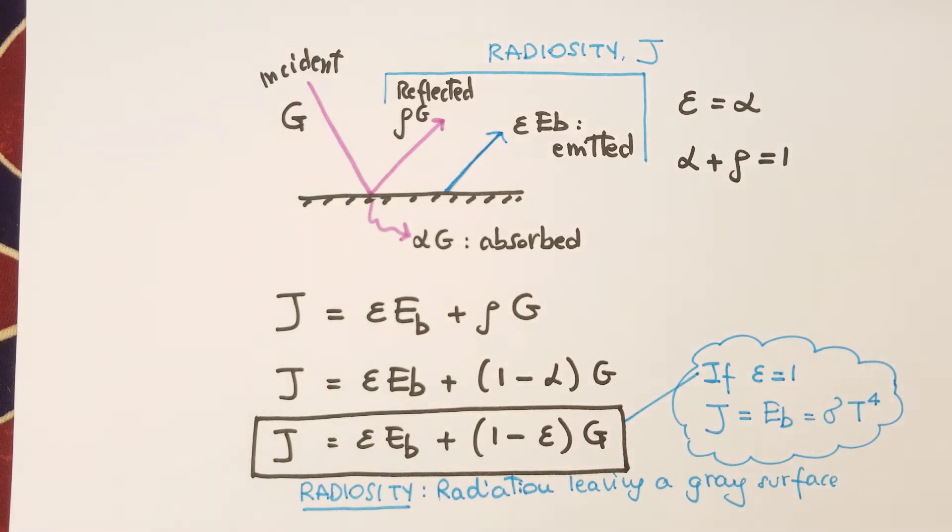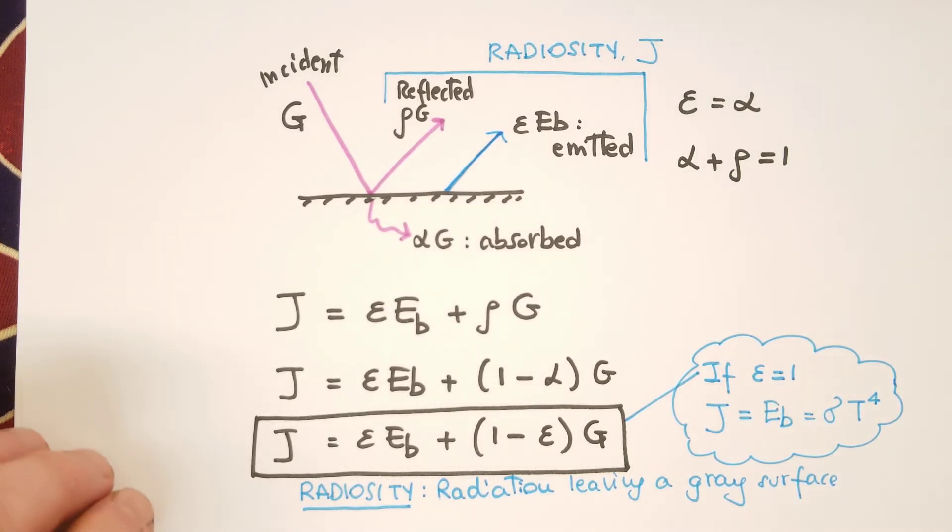So radiosity is the total radiation that leaves a gray surface. Note that if ε is equal to 1, this part here is 0, so there is no reflected power. And ε is 1, so J is equal to Eb. That's also equal to σT⁴. So that's the energy that leaves a surface.